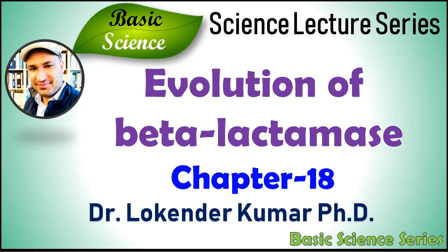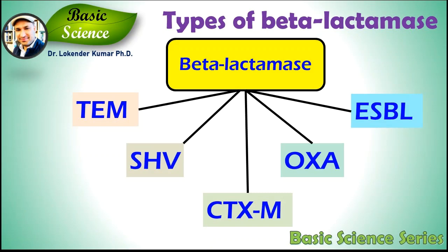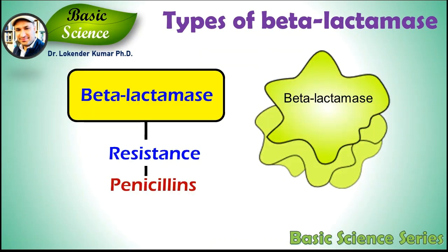This episode is dedicated to the types of beta-lactamases including TEM, SHV, CTX-M, OXA, and ESBL — extended spectrum beta-lactamases. In the previous episode we have already discussed the basics of beta-lactamases. Now in this episode we will know more about their types, and by the end of the episode you will have all the basic information about the evolution of beta-lactamases.